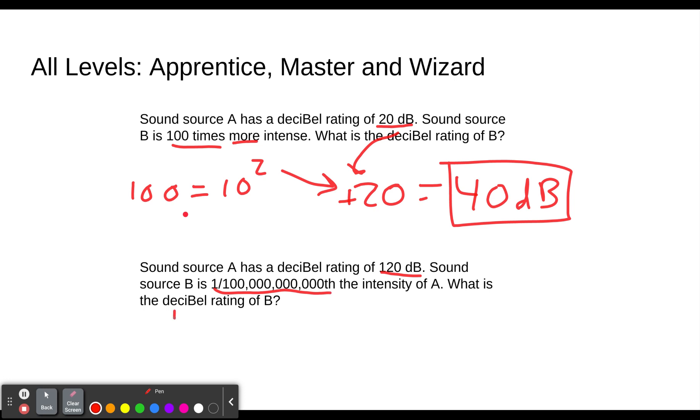So we take this number, 1 over 1, 2, 3, 4, 5, 6, 7, 8, 9, 10, 11. So that is 10 to the negative 11th power. We take that negative 11, we put negative 110. We just put a zero after the 11th.